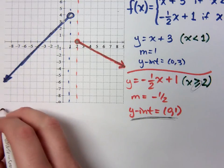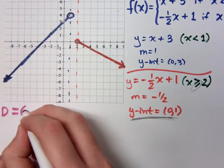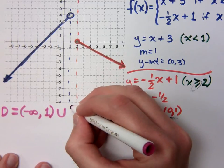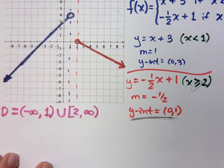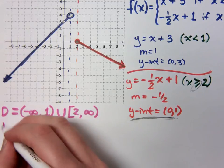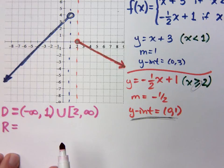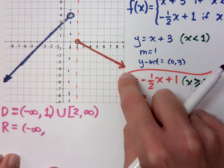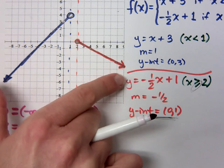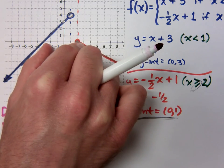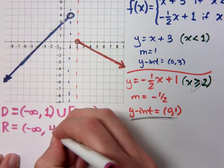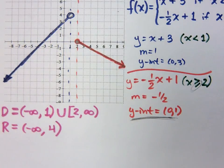What is the domain for this function? It goes from negative infinity to 1, close parenthesis, union with bracket 2 to positive infinity. Now the range: it comes from negative infinity all the way up to 4. Notice that when you project everything onto the y-axis, anything on the blue line is also included on the orange line, so it goes all the way up to 4, open parenthesis.